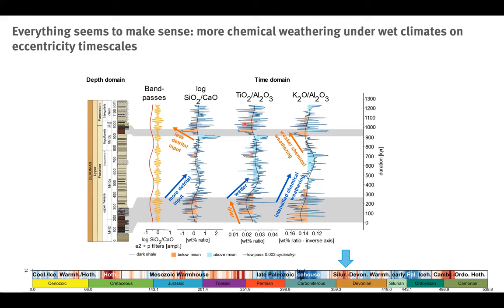The same approach applies to the potassium-over-aluminum ratio, which is a proxy for the type of weathering occurring in the continental hinterland. On this axis — inverted — more aluminum indicates intensified chemical weathering (blue shades) and more potassium indicates weaker chemical weathering (orange). On long timescales everything works as expected: more detrital input corresponds to wetter phases, and during wetter phases there is more chemical weathering. On timescales of several hundred thousands of years it functions as you'd expect.